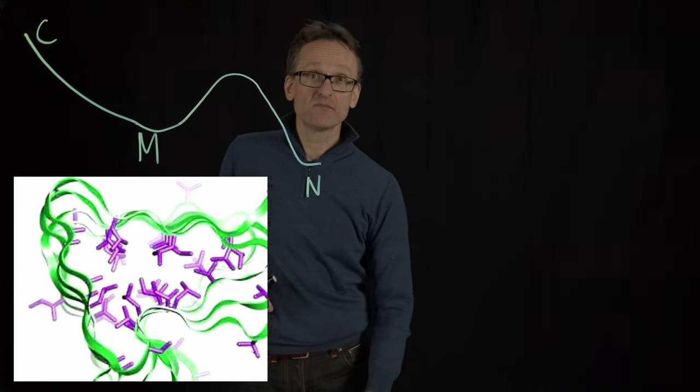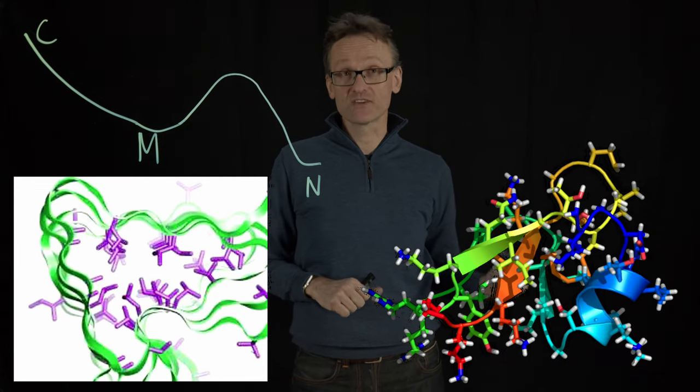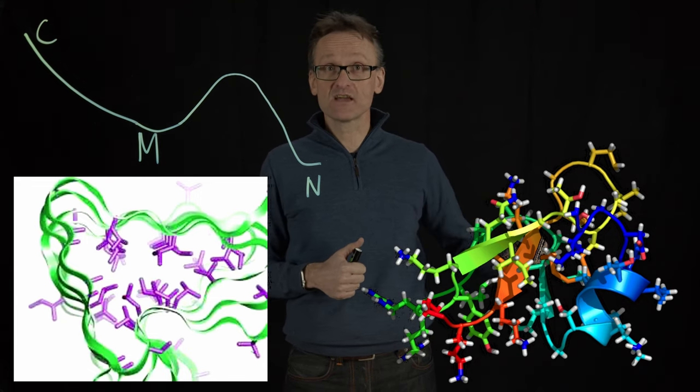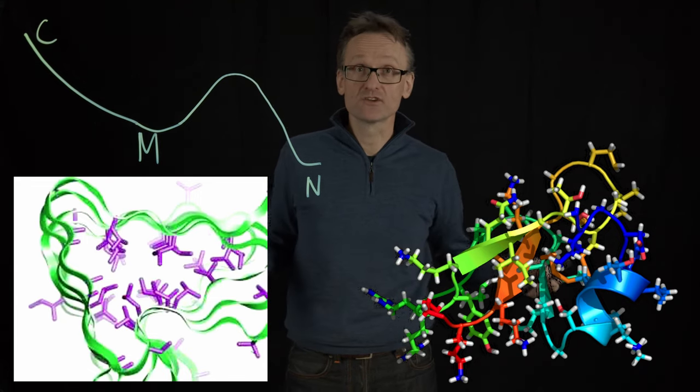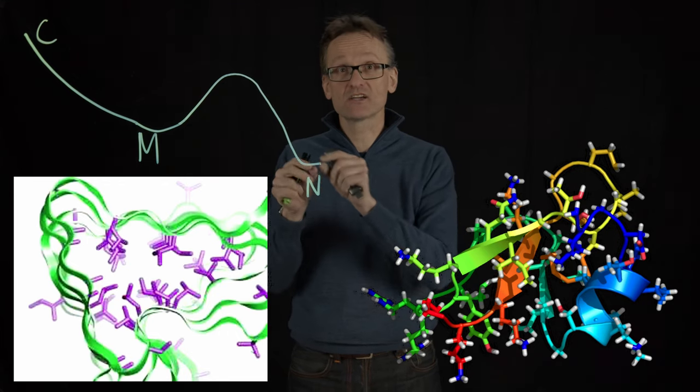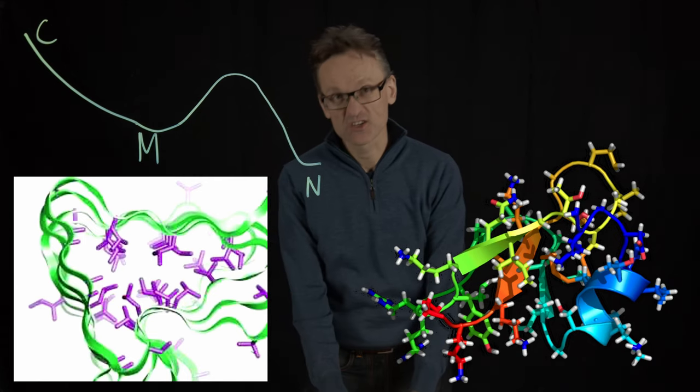An easier way might be to have a molecular model where you see all these side chains. The reason we have the structure of these side chains is that they're so specific that they have the exact same rotation in billions of copies of this in the crystal. So the packing in the actual native state is unique, and it's the uniqueness that creates this phase transition.